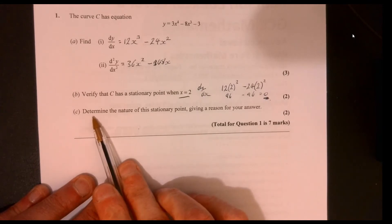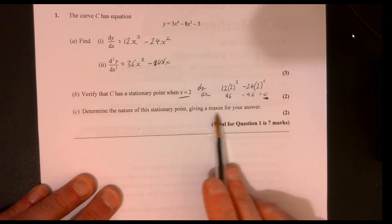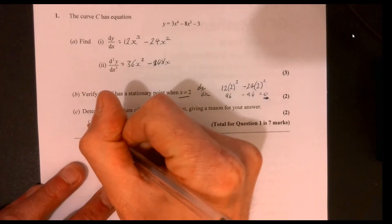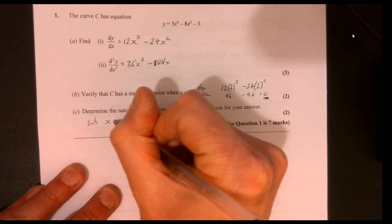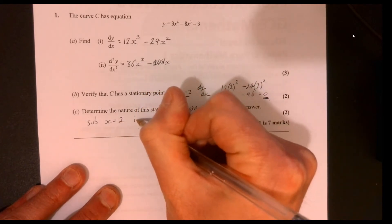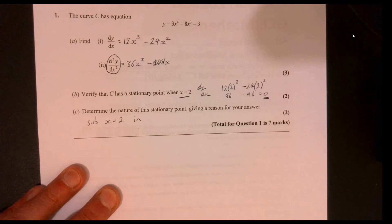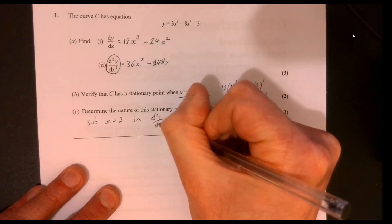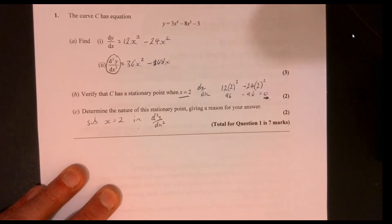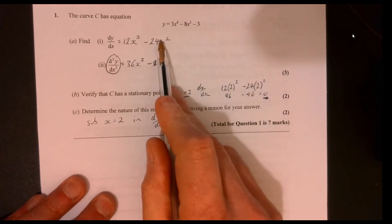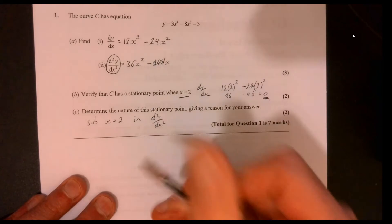Part C, determine the nature of this stationary point, giving a reason for your answer. So what we do is we sub x equals 2 into second order. Let's just do that quickly, see what we get. This whole point we're doing this bit just here, right? The question's led us through this quite nicely.